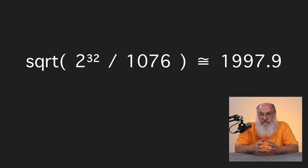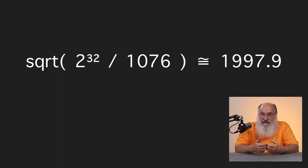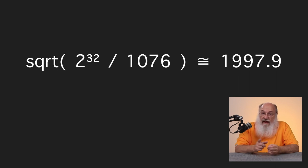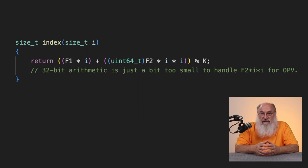Exactly where does it break down? We can estimate that by dividing 2 to the 32 by 1076 and taking the square root, ignoring the other term since it's much smaller. We get 1997-point-something, so i values up to 1997 are probably fine. But i from 1998 all the way to 2151 will fail by integer overflow. That's 154 of the bit indexes computed wrong, which is a match for the approximately 152 errors we got from the count of error bytes.